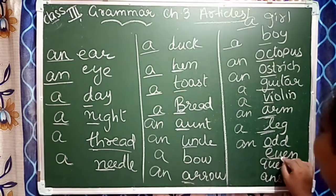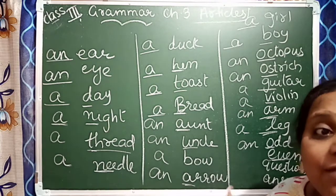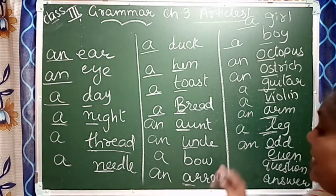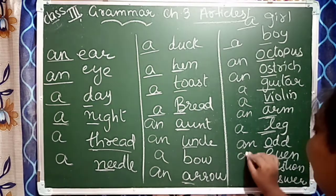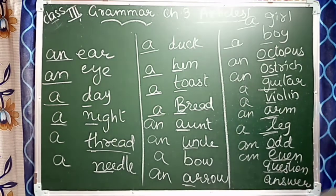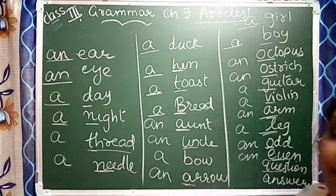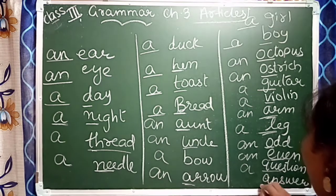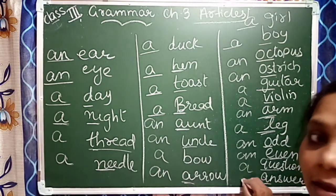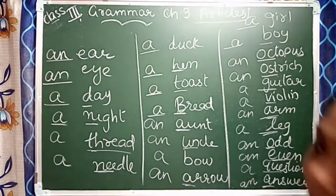Even — E is a vowel sound, so 'an' will come. Cushion — what will come? 'A' — it's a consonant. Answer — 'an' will come. Okay, this we have done.